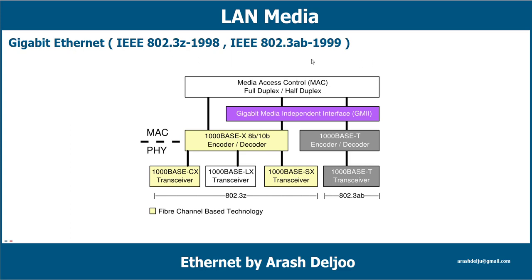IEEE 802.3ab, ratified in 1999, defines Gigabit Ethernet over copper and became known as 1000Base-T. With 802.3ab, Gigabit Ethernet became a desktop technology as organizations could use their existing copper cabling infrastructure.